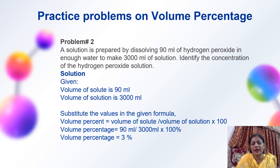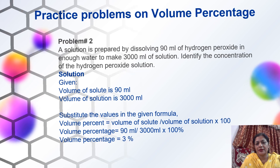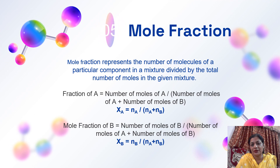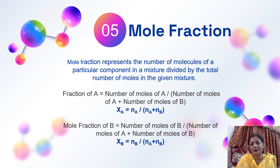Mole fraction: as the name suggests, it is a fraction and a unitless quantity. Mole fraction represents the number of moles of a particular component in a mixture divided by the total number of moles in the given mixture. Chi-A equals moles of A divided by (moles of A plus moles of B). It is represented by chi. Chi-A plus chi-B equals 1.